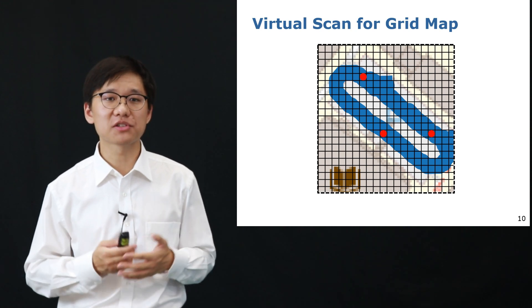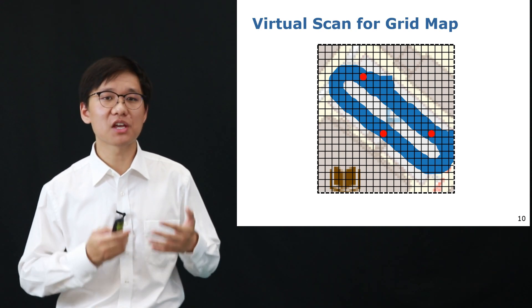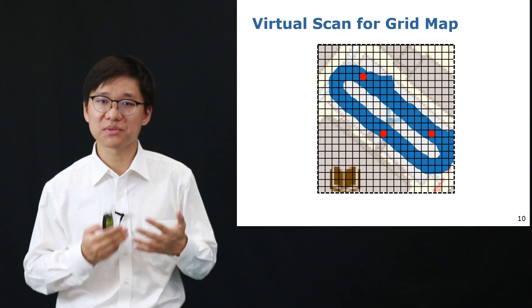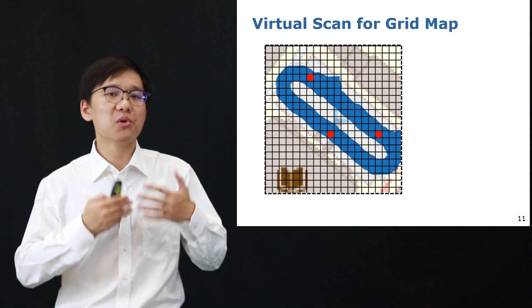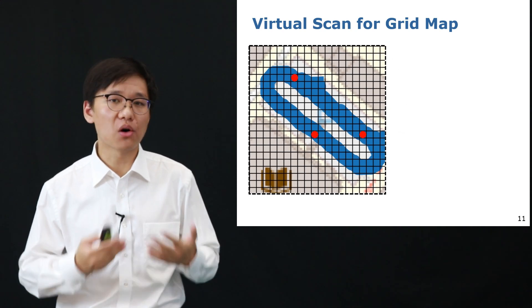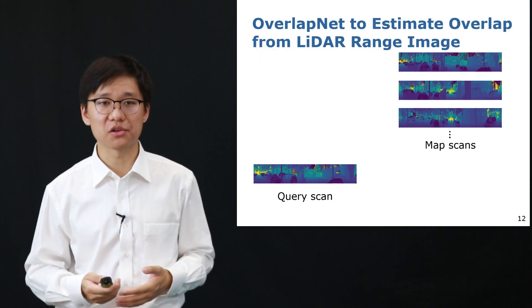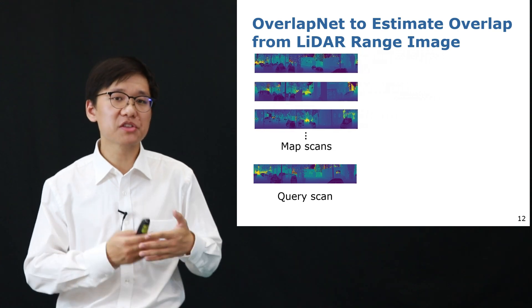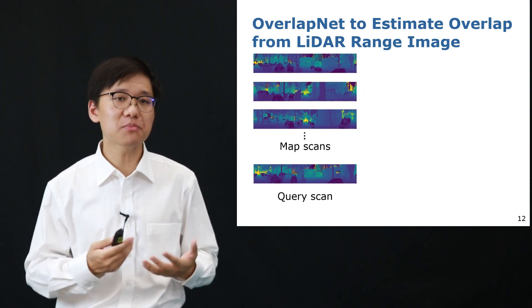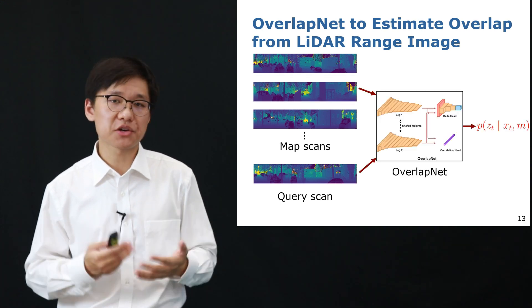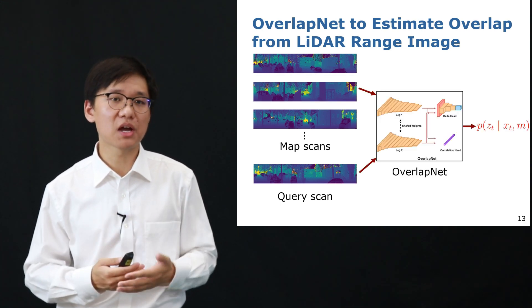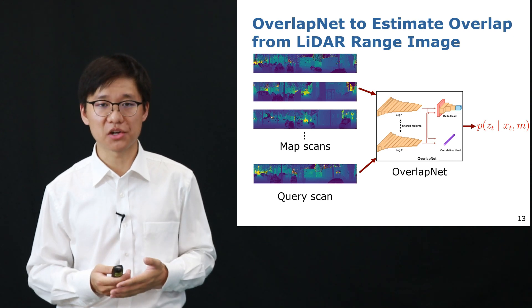Taking three particles as an example, we will assign each particle the nearest map scan according to its location. And after that, we will compare the query frame to all those map scans assigned to the particles. And for computing the observation model, we then use them as the input of our OverlapNet and use the output estimates to calculate the observation model and to update the weights of the particles.